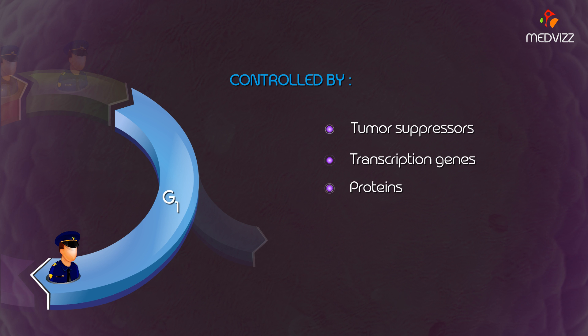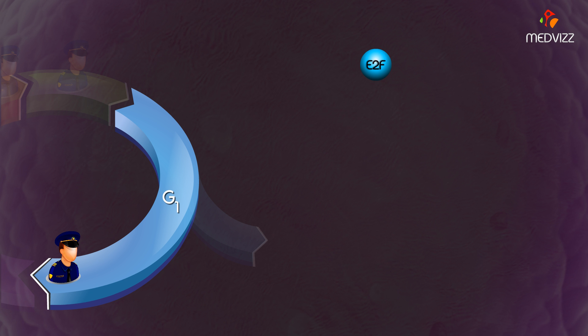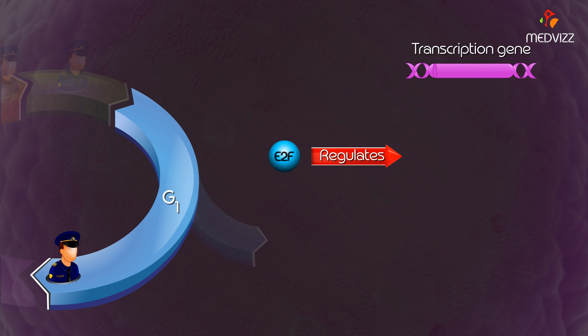These include proteins that detect DNA damage, enzymes that allow the cell to progress to the S phase, and signaling molecules that activate those enzymes. The gene E2F regulates expression of transcription genes, cyclin-dependent kinase 2, cyclin E, and cyclin A.